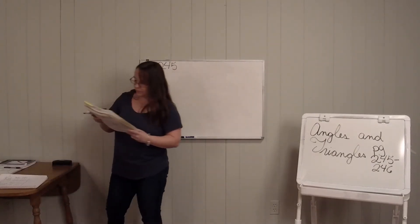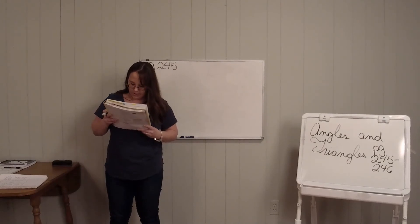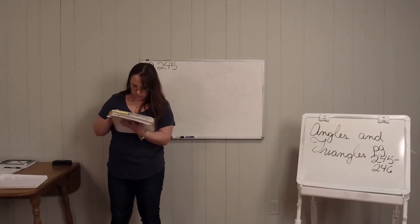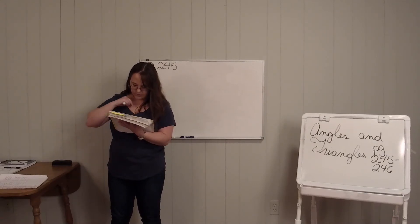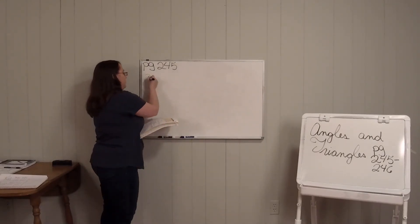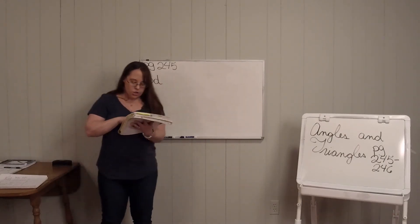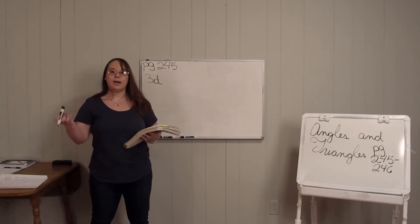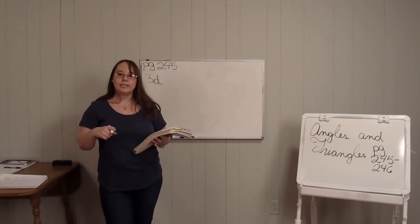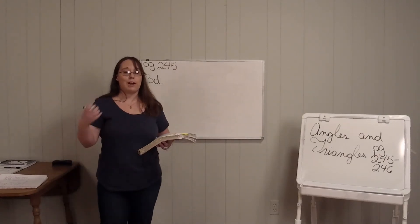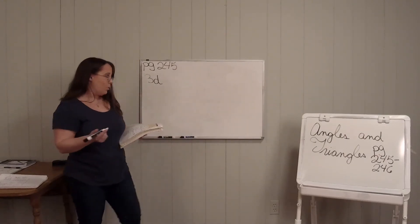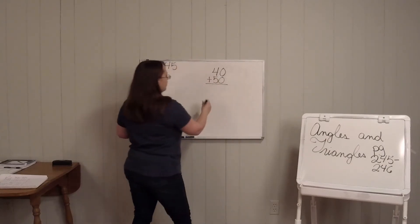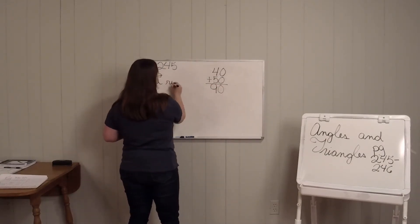Now if you look at number three on page 245, look at 3D. It says two of the three angles are 50 and 40, and it wants to know what type of triangle it is — is it isosceles, equilateral, or a right triangle? Well, you have to figure it out. Take 40 and 50 and add them together and it's going to give you 90, so it's a right triangle.